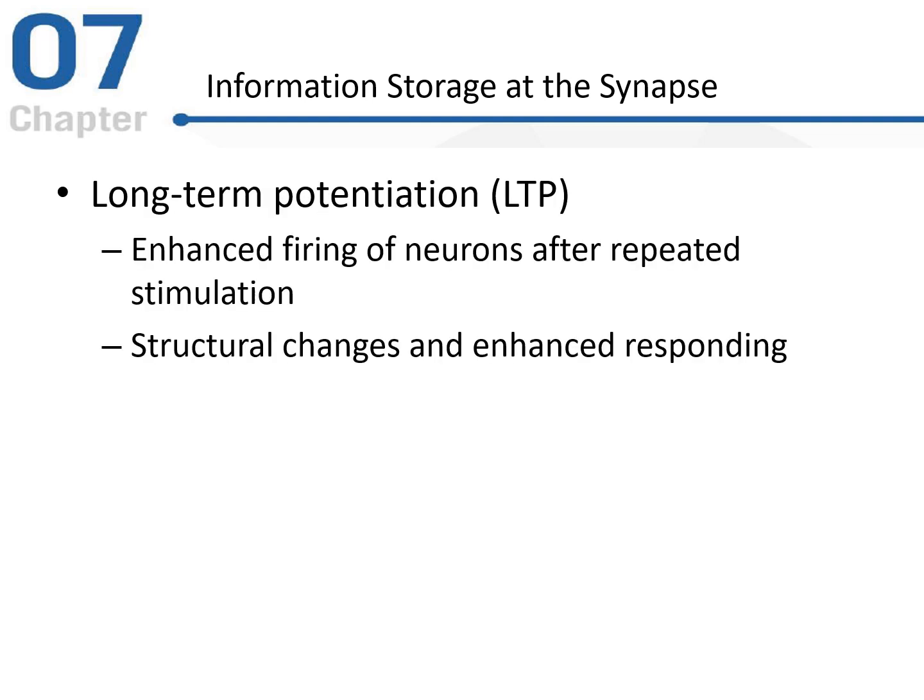Now we'll look at how this actually works at the synapse. We're looking at LTP, or long-term potentiation — this is enhanced firing of neurons after repeated stimulation. This is kind of what is more responsible for the structural changes and enhanced responding we see in the brain. The physiological structures occurring after consolidation — this is how it's occurring. With repeated practice and repeated use, you're actually having more firing of neurons because there's repeated stimulation, and consolidation is happening. This increased firing encourages structural change in the synapse and enhances responding.